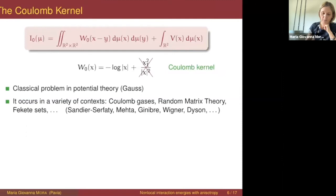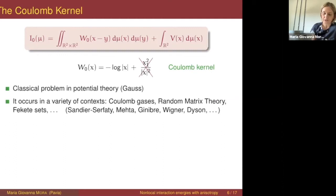If we forget for a moment about the anisotropy and consider purely Coulomb interaction, then the minimization of this energy is a very classical problem in potential theory, going back at least to Gauss in the framework of electrostatics. This corresponds to finding the optimal distribution of positive charges into a capacitor under the action of an external field, which is what I call the confinement.